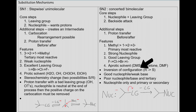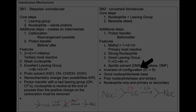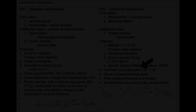Inversion of configuration occurs, so therefore you will get from an R into an S configuration. A nucleophile will attack from the back and then cause a leaving group to leave, and then you will get your product. This is why it is concerted.